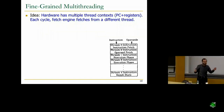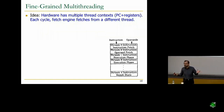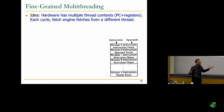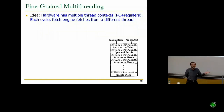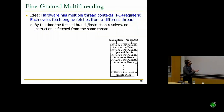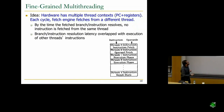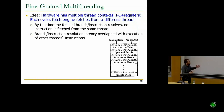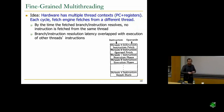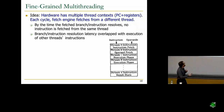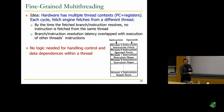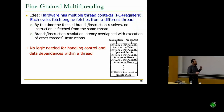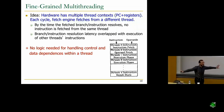If you don't have two instructions from a single thread in the pipeline, there is no need to check for data dependencies within a thread. There is no need to predict branches, because you're not going to fetch from that thread until the branch resolves. By the time the branch resolves, no instruction has been fetched from the same thread. The latency of resolution of a branch — or any instruction producing data needed by another — is overlapped with the execution of other threads' instructions. So there is no need for handling control and data dependencies within a thread.